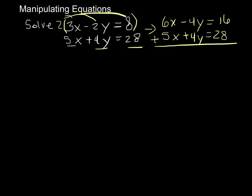And now I can actually add the two equations together, because when I do that, my y variables cancel. 6x plus 5x is 11x. Negative 4y plus 4y is 0y. And 28 plus 16 is 44. And now we can divide by 11. And that means that x is equal to 4.